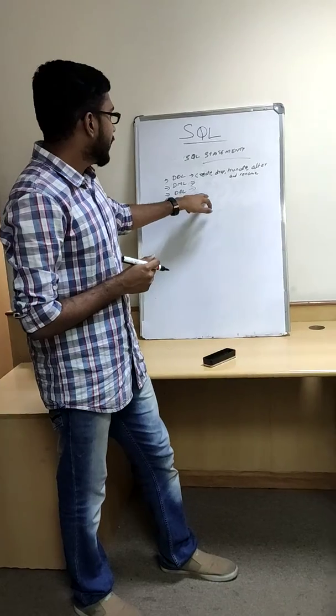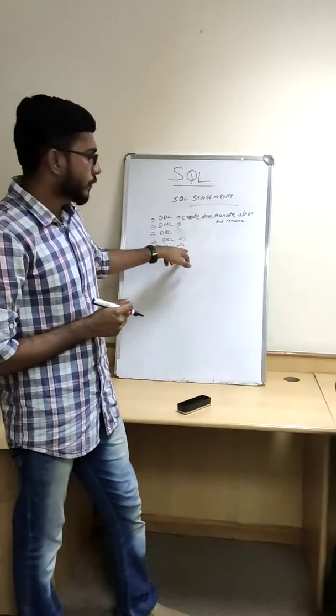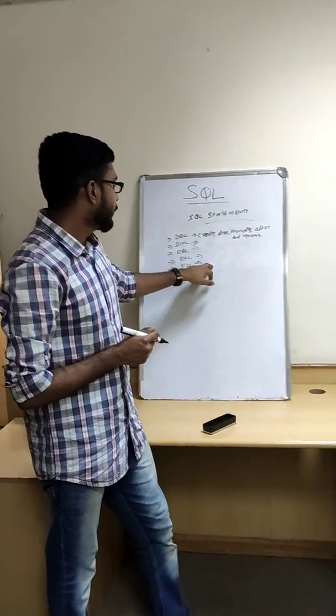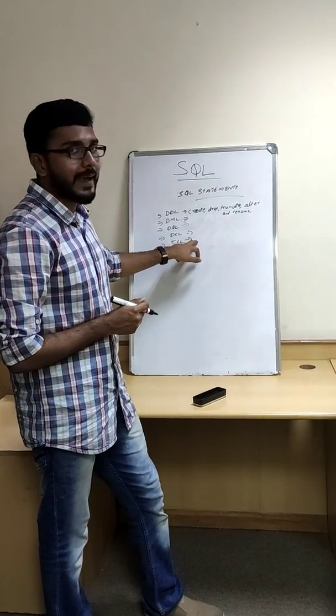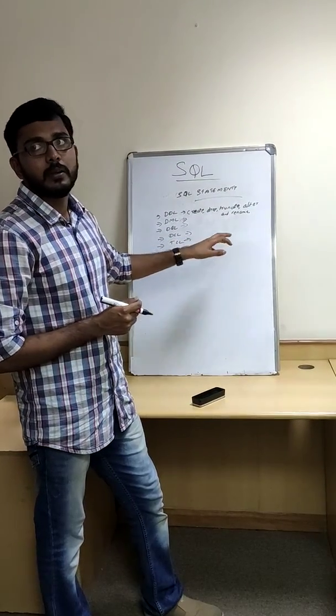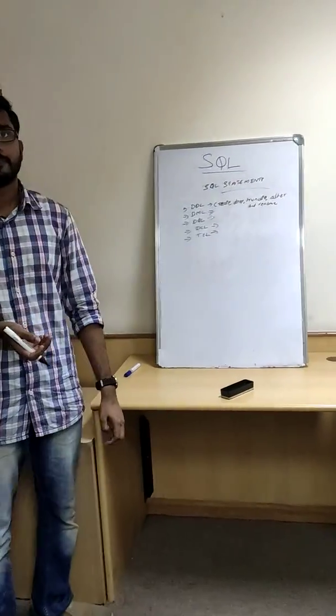Under DCL, grant and revoke will be coming. Under TCL, rollback, savepoint, commit. These things are coming.